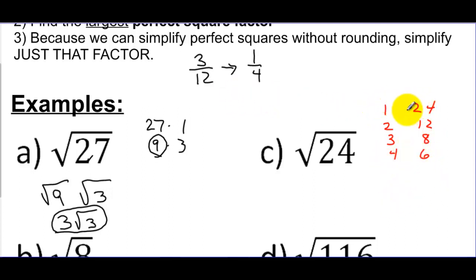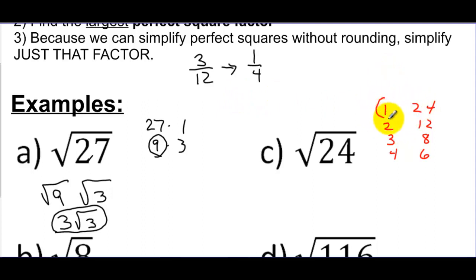So if I look at these numbers and say, can I square root any of these in my head? Well, the square root of 1 — sure, I can do that. So that's a perfect square, but that's always going to be there.